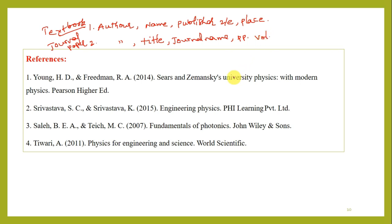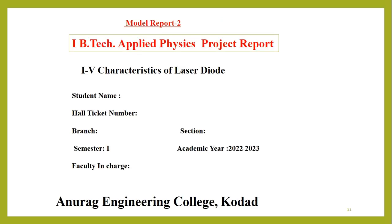So that is the idea about a Newton's ring experiment as a project work. These are just for reference; little modifications may be possible. Then we go for another one. We will consider a semiconducting device — a laser diode. If we treat this as a project: 'IV Characteristics of a Laser Diode.' We have to write the student name, hall ticket number, branch, section, semester, academic year, and faculty in charge — same as before.